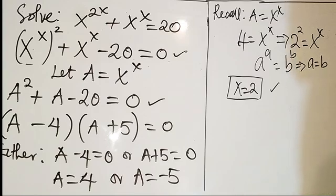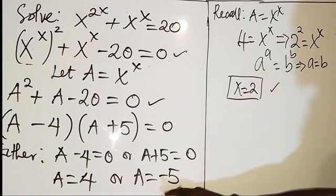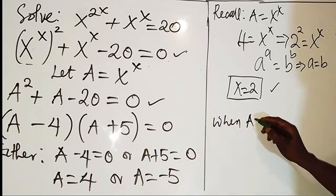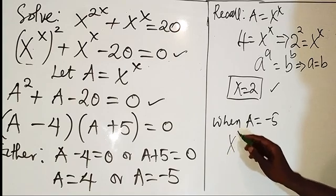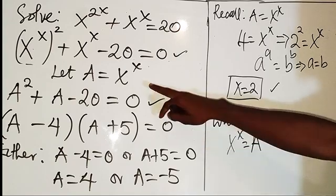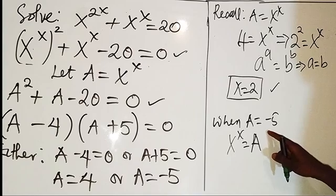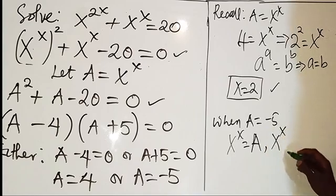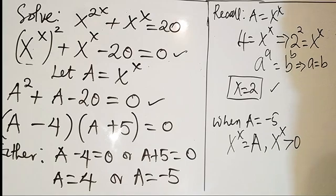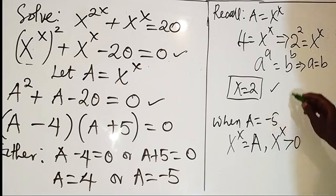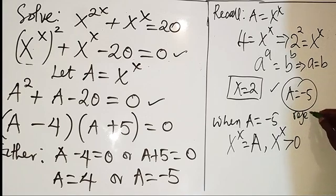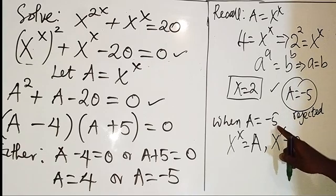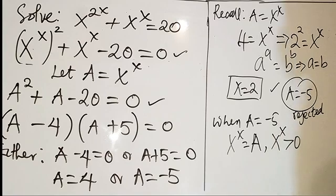That's one of the possible solutions we have. Then let's look at when A equals minus 5. So now if you plug this, you know that x to power x equals A according to what we have here. So therefore having our A to be minus 5, x to power x will always be greater than 0, that is positive. Because of that, this A equals minus 5 will have to be rejected, because x to power x cannot be less than 0, it will always be greater than 0.